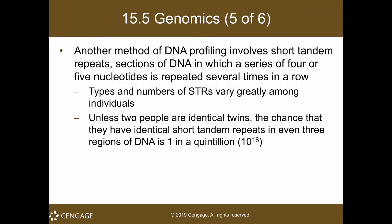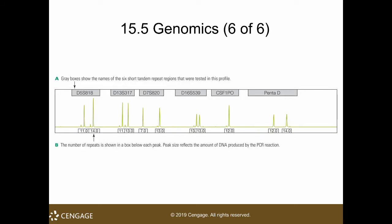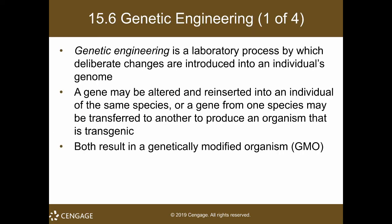Another method for DNA profiling involves short tandem repeats — sections of DNA with a series of four or five nucleotides repeated several times in a row. The types and numbers of short tandem repeats vary greatly among individuals. Unless you have an identical twin, there is a very small probability of two different individuals having the same DNA sequence. This idea relies on probability and statistics, and each individual shows different amounts of those tandem repeats.